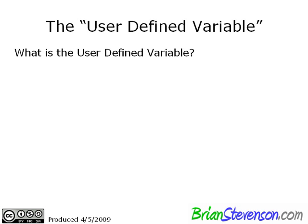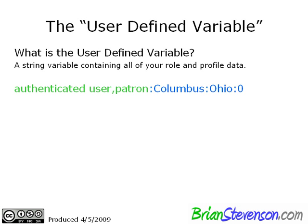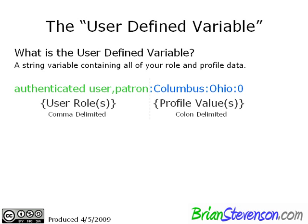What is the user-defined variable? It's a string variable containing all of your role and profile data. For example, on the left in green, authenticated user and patron are user roles set up on my sandbox account. On the right in blue, you'll see profile information such as Columbus, Ohio — a city and state — and a Boolean value for whether or not they've subscribed to a newsletter. The user roles are comma-delimited, and the profile values are colon-delimited.